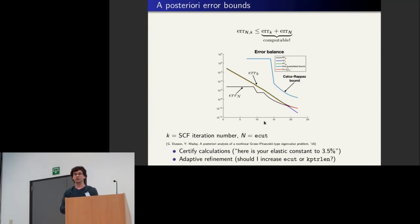This is a priori estimate. This is a posteriori bound. A posteriori bound, this is not my work, this is the work of Genevieve, who's over there. And the point here is to be able to say, given the computation, what is the error I make? So I'm assuming here that the only error is due to the fact that you have a finite basis size, so Ecut, and second, that you don't always converge the SCF cycle to the end.